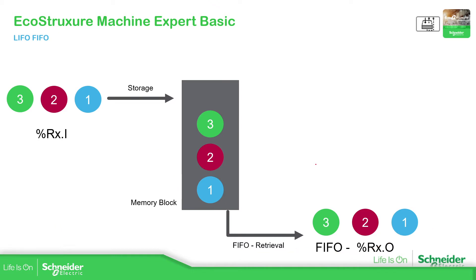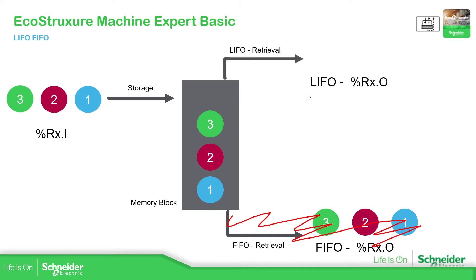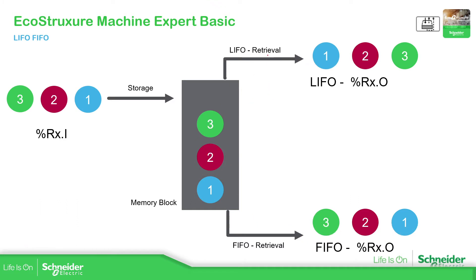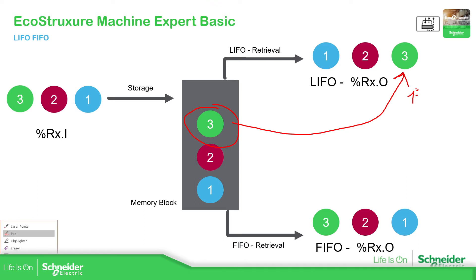Now imagine the opposite way. If we have configured it as LIFO, when I retrieve from here, the first element to leave will be the last one that entered the storage — so the third value will appear first. The next time I retrieve, that element will be the number two because now it's the last one. If I retrieve once again, the only one available is the first, so we move it over here. This is what LIFO means — the last input element in storage is the first to leave.